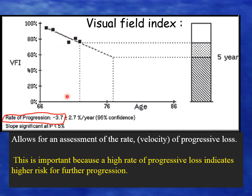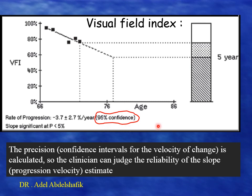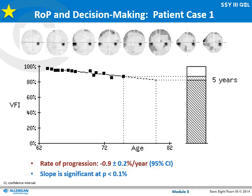From this regression line you can see the rate of progression. In this example the rate of progression is minus 3.7 percent per year. The most accepted rate is 3 percent — when it is higher than that, it is not acceptable and you need to change your treatment. The confidence interval tells the clinician how sure this value is accurate. In this example the slope is minimal and it is acceptable to continue the current treatment.